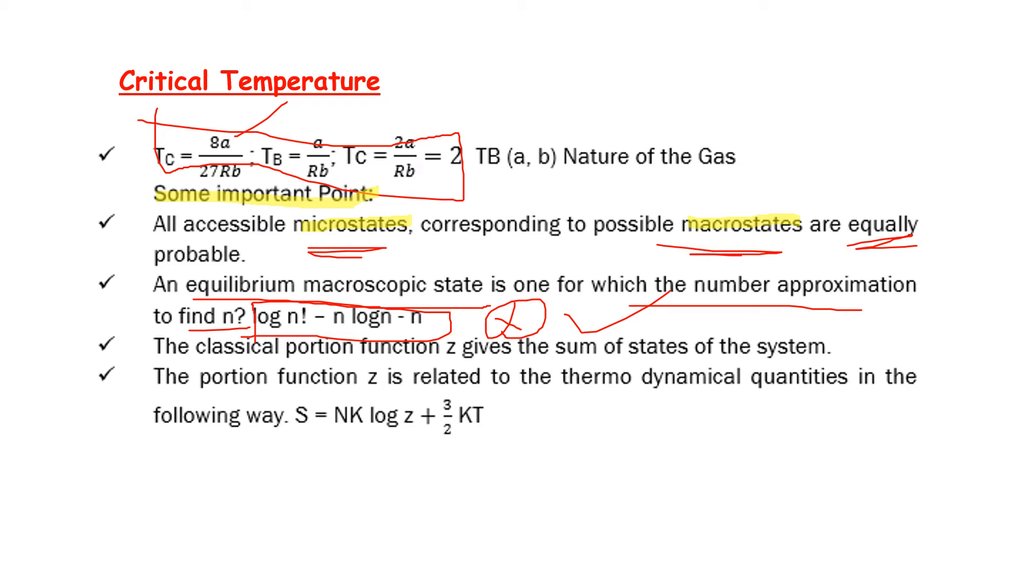The classical partition function z gives the sum of states of the system. The partition function z is related to the thermodynamical quantities in the following way: S equals Nk log z plus 3 by 2 kT. This is the thermodynamical classical partition function formula approximation.